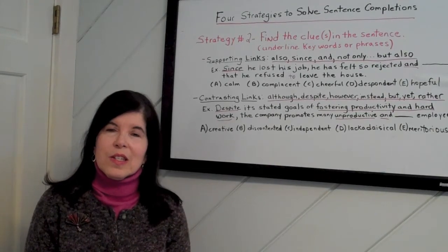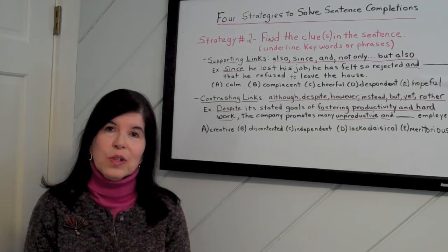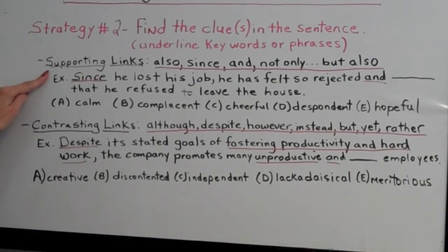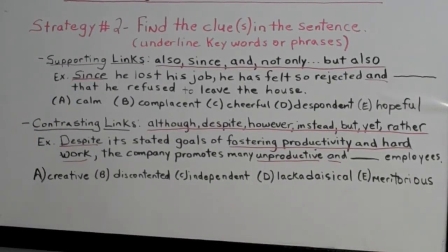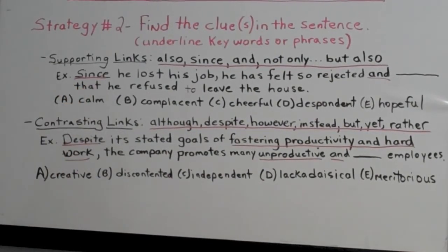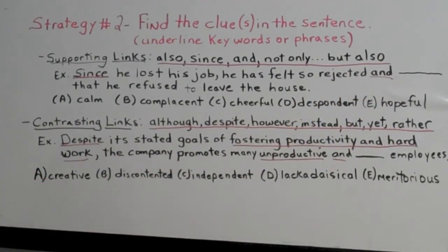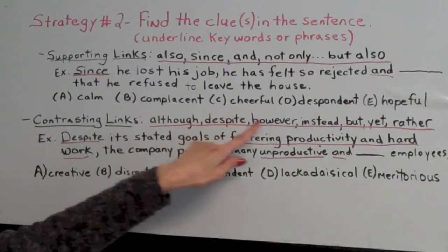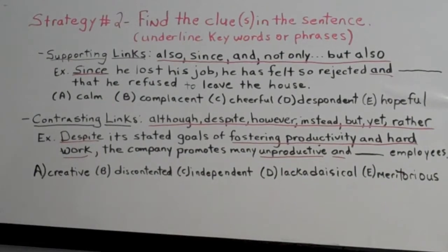Supporting and contrasting links — trigger words — provide important clues. Supporting links include words like also, since, and, not only, but also. For example: 'Since he lost his job, he has felt so rejected and blank that he refused to leave the house.' Since he lost his job he's very unhappy, so we need a word related to rejected — perhaps depressed. Looking at the choices — calm, complacent, cheerful, despondent, hopeful — despondent is the best answer, as it means close to depressed.